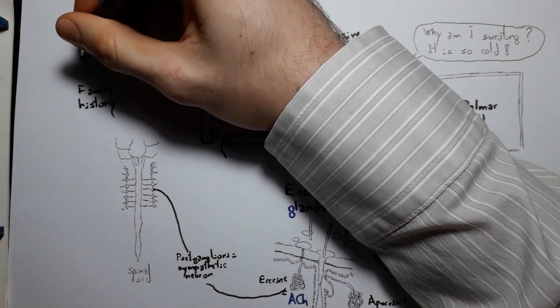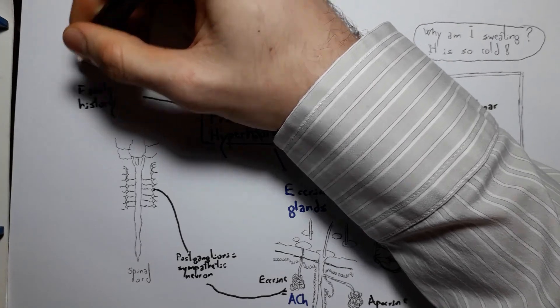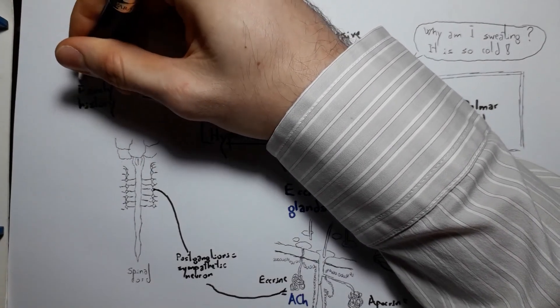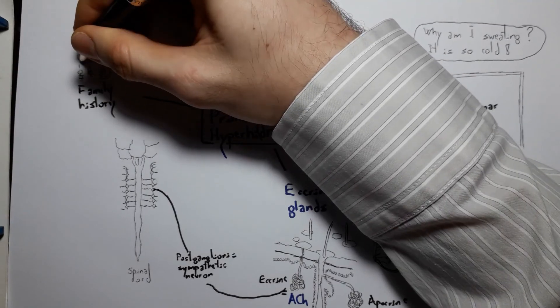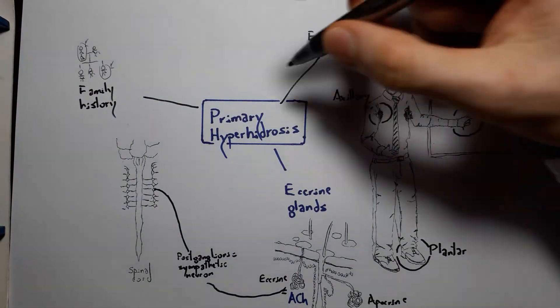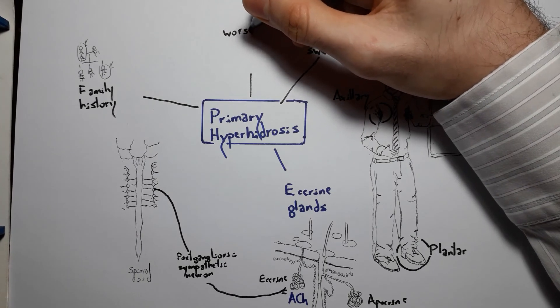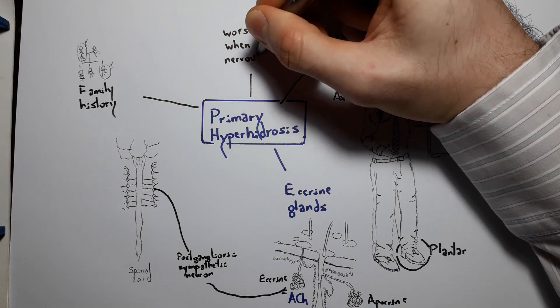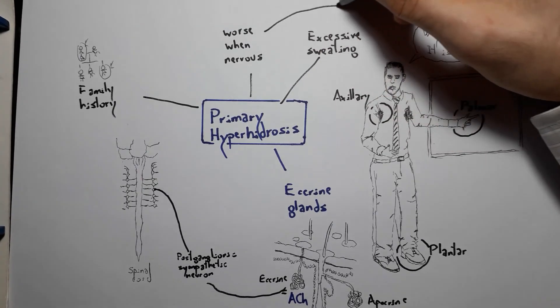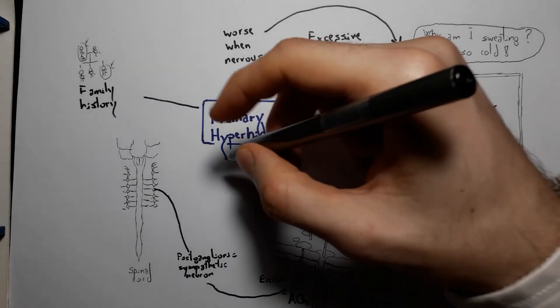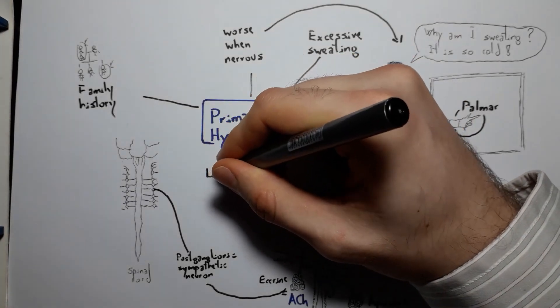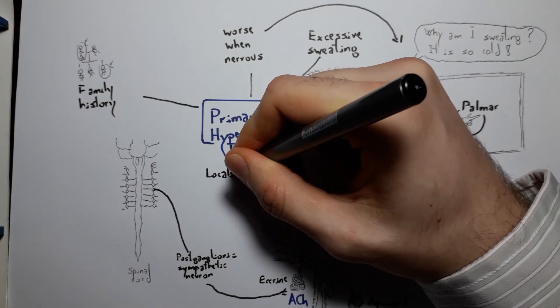Some hallmarks of the disease that help differentiate its clinical presentation from normal sweating include, for example, a family history, that is, a history of other relatives that also exhibit excessive sweating, increased sweating, or worsening of the condition under psychological stress, such as nervousness.